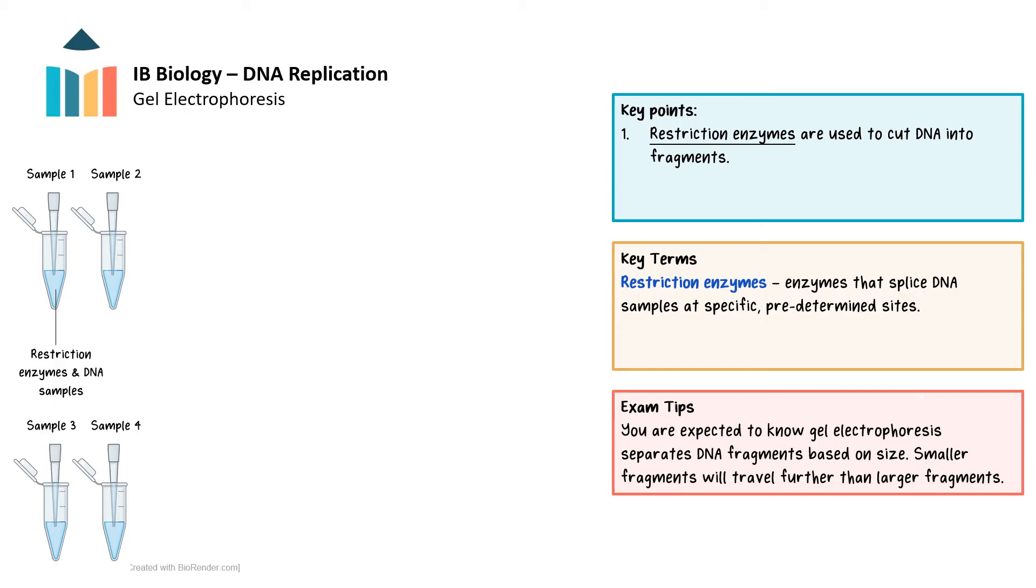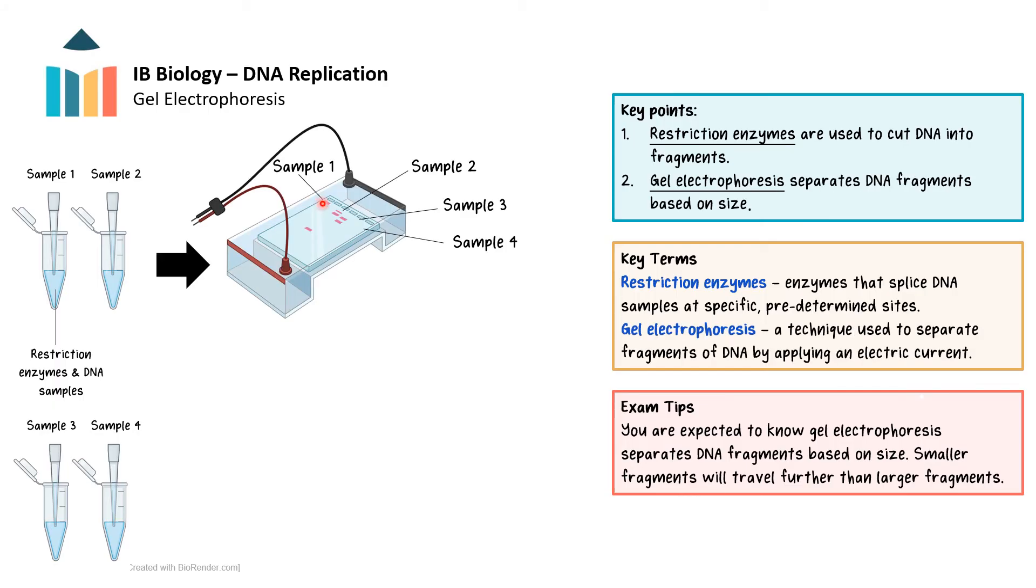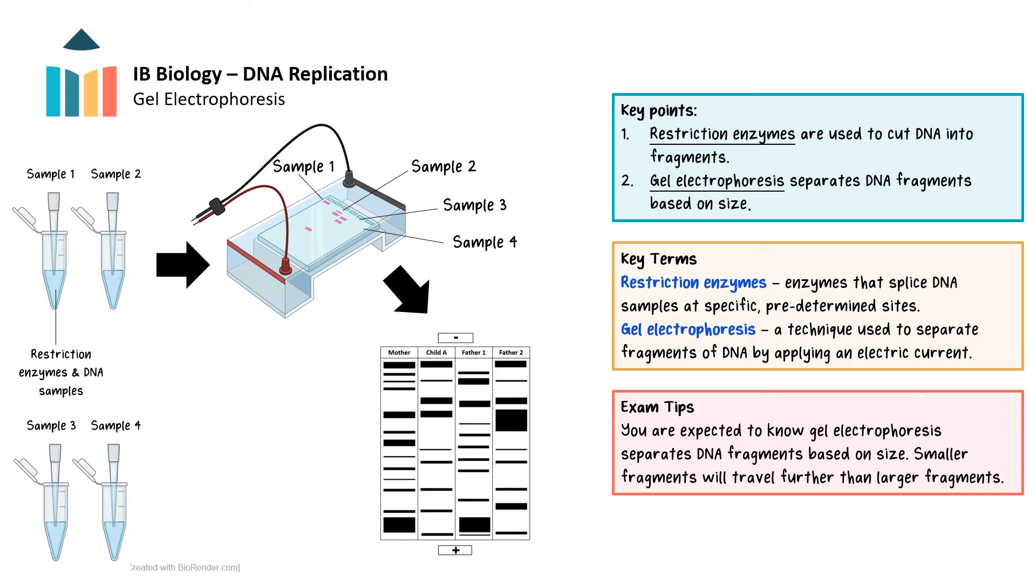In gel electrophoresis, samples are placed in the wells indicated here. An electric current is then applied, causing the DNA fragments to migrate based on their size. DNA is negatively charged, so the fragments move towards the positively charged end shown here. The smaller DNA fragments migrate a greater distance in the gel. A DNA profile or fingerprint emerges, exemplified in the provided illustration, detailing the fragments for each individual and their relative sizes based on migration distances.